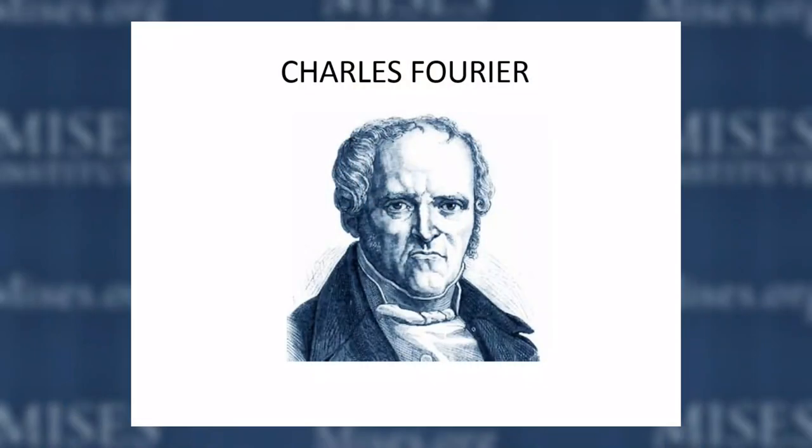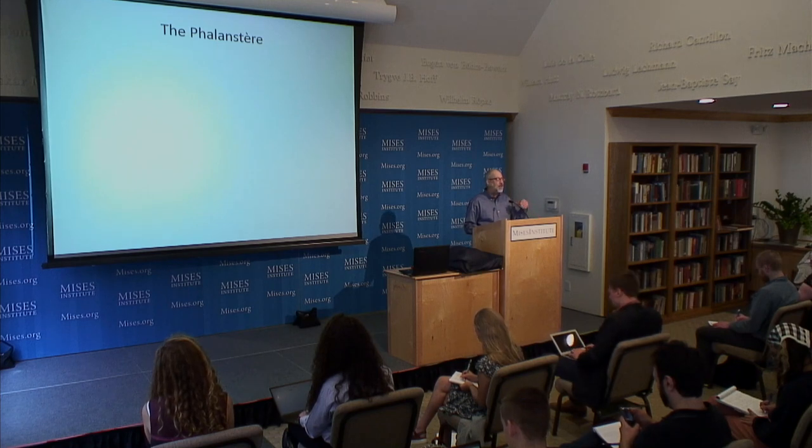Take Charles Fourier, the French utopian socialist. Fourier came up with an idea for how human beings and economic activity should be organized. He called it the phalanx — the Roman phalanx of 144 soldiers in a certain formation. Right away you can see he's a socialist: he wants to mold human beings according to a certain vision. All of these socialists believed they had access to a secret intuition, a secret source of knowledge none of us possess. They're the ones who would give us the truth about how human beings should interact.